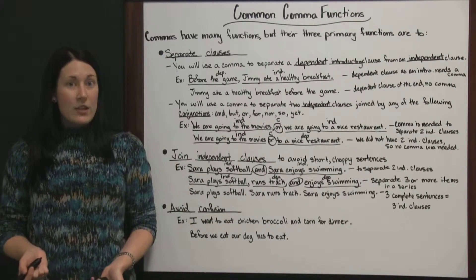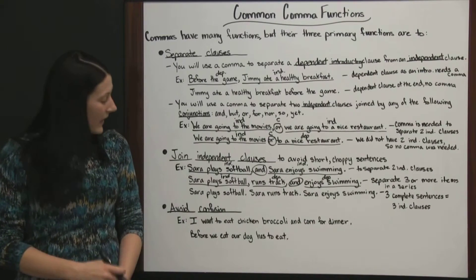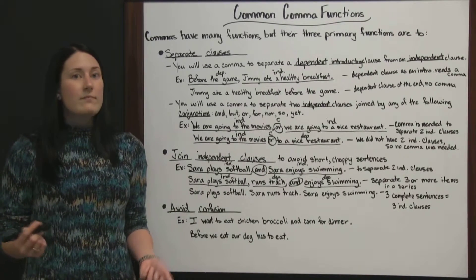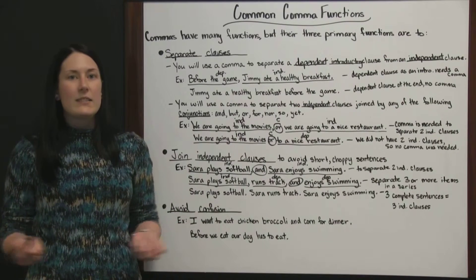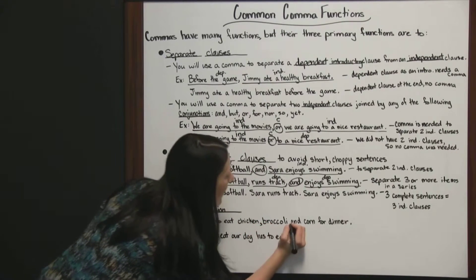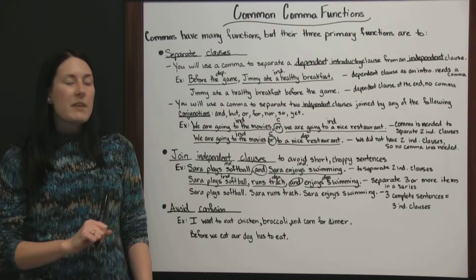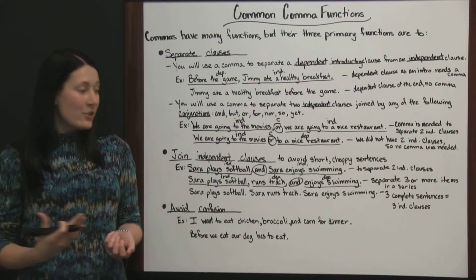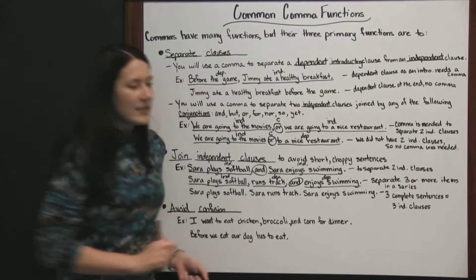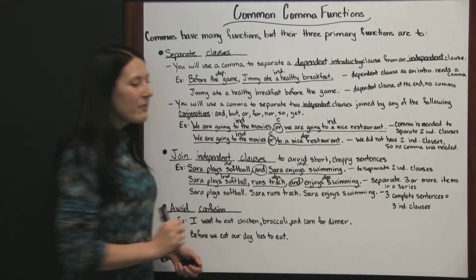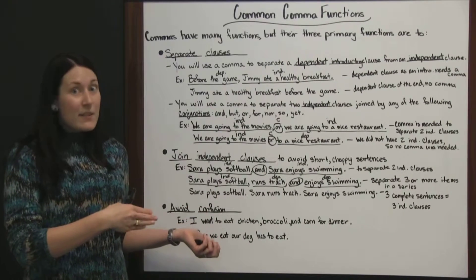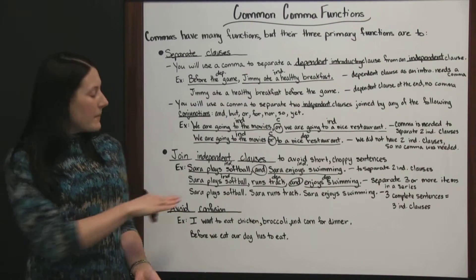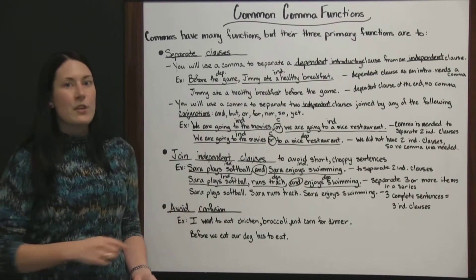Let's look at the third primary function of a comma: they are used to avoid confusion. 'I want to eat chicken broccoli and corn for dinner.' Without a comma, it sounds like you're saying you want to eat 'chicken broccoli,' which is not a real food. What would make more sense is: 'I want to eat chicken, broccoli, and corn for dinner.' Then you're telling someone you'd like three items — not 'chicken broccoli,' which makes chicken look like an adjective to broccoli. The comma before 'and' in a series of three or more items is optional — some people like it, some don't — but you definitely need the first comma; otherwise the meaning of your sentence is unclear.